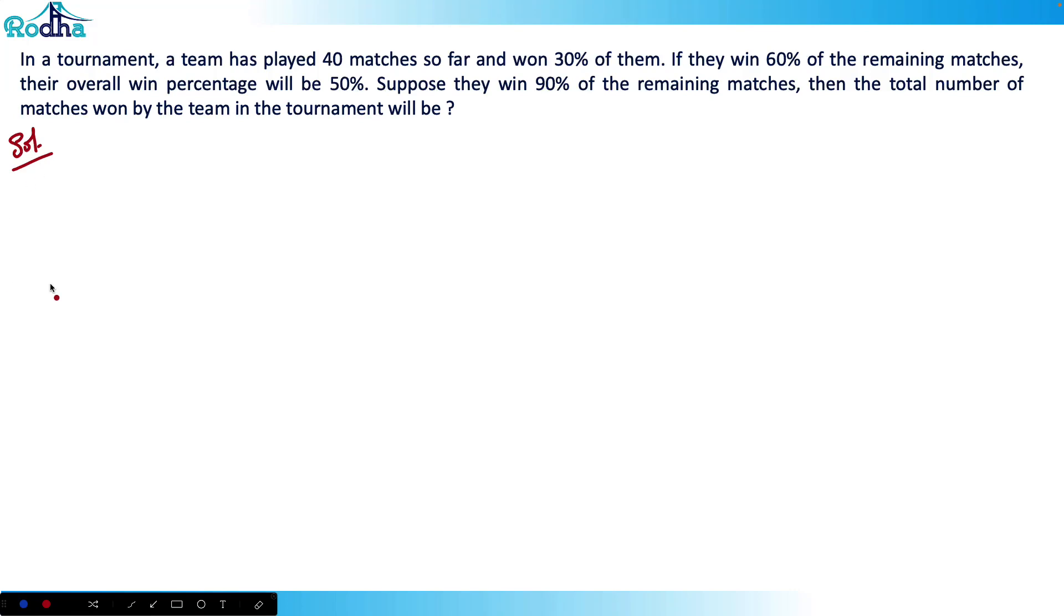Hi guys, let's look at the next question from CAT 2021 Slot 3. In a tournament, a team has played 40 matches so far and won 30% of them. If they win 60% of the remaining matches, their overall win percentage will be 50%. Suppose they win 90% of the remaining matches, then the total number of matches won by the team in the tournament will be?